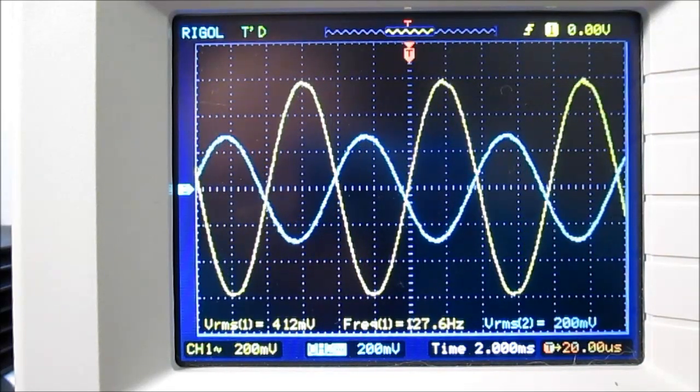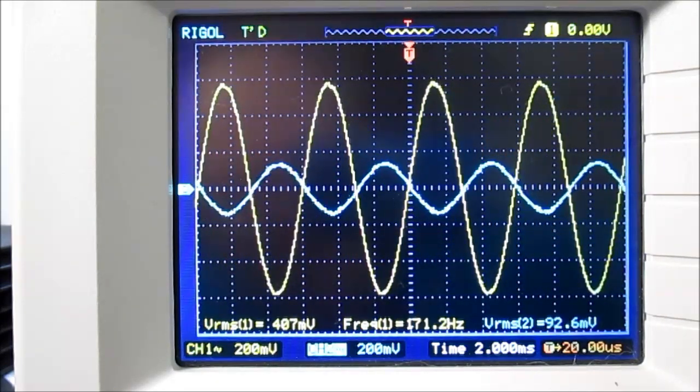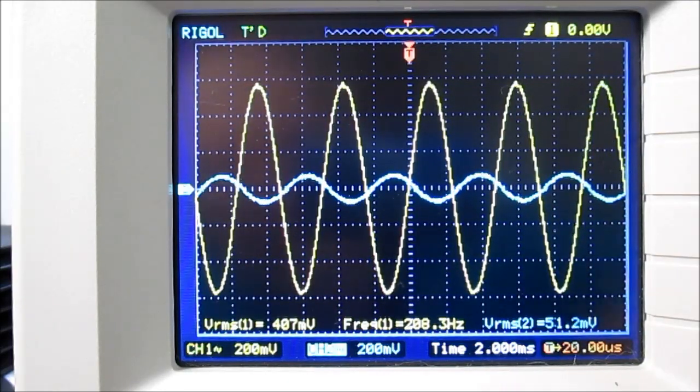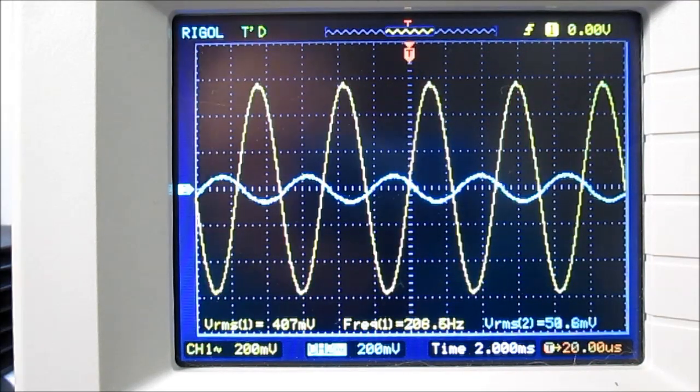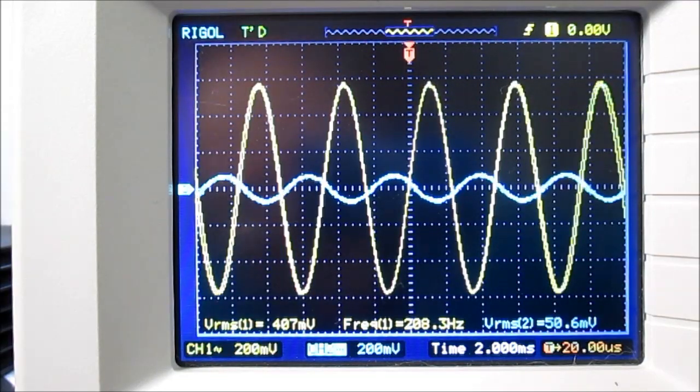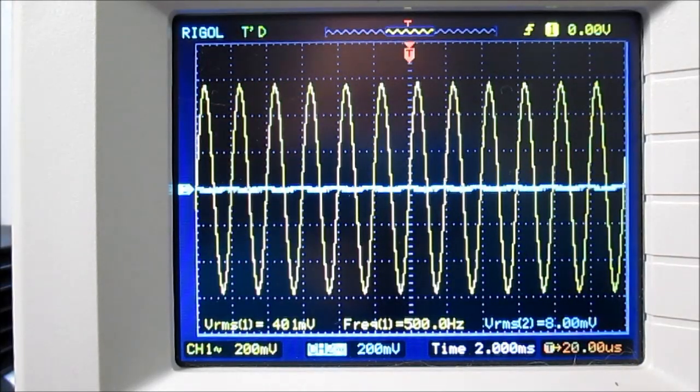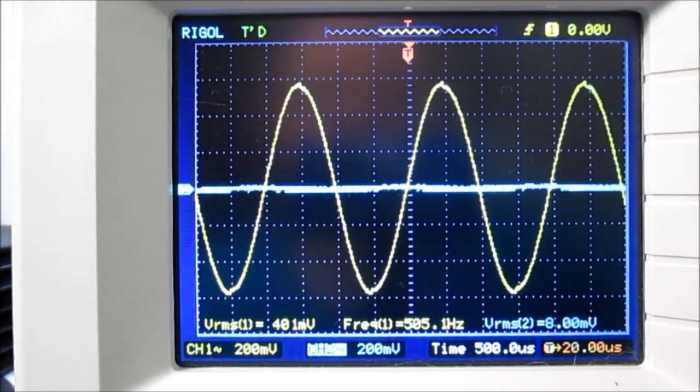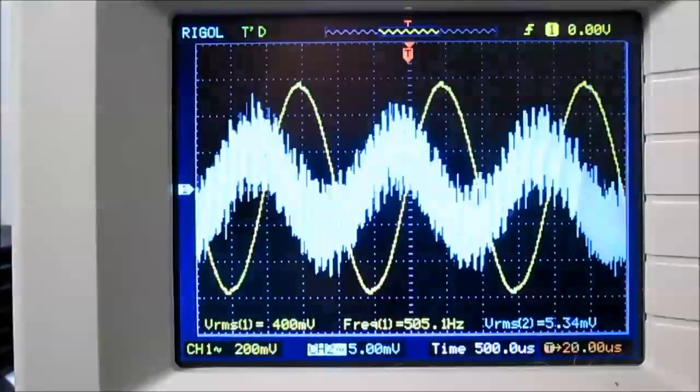But when we hit the crossover point, it drops like a rock. And you can see right around here's our crossover point. So when we go above that, it really drops out quick. So at 200 Hz, it's 51 millivolts versus the 407 millivolt input voltage. And again, I'll go up to 500 Hz. And it's pretty much gone. Let's turn that up. It's gonna be really noisy. See if I can clean that up first. I'll be right back.